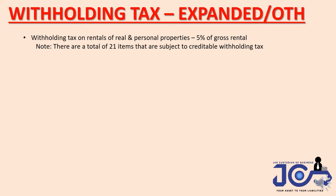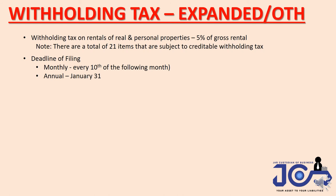Next is withholding tax expanded (EWT). The most common EWT for business owners is withholding tax on rentals of real and personal properties. There are 21 total types of EWT, reaching up to 30-plus percent in total across all types. But the most common BIR tax compliance we file is withholding tax expanded on rentals. For example, if your business is renting a shop, 5% of the gross rental is the withholding tax credit you pay. The deadline is every 10th of the following month — so your January filing is due February 10th. The annual deadline is January 21st.